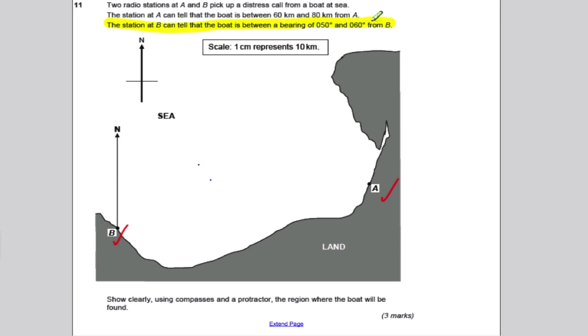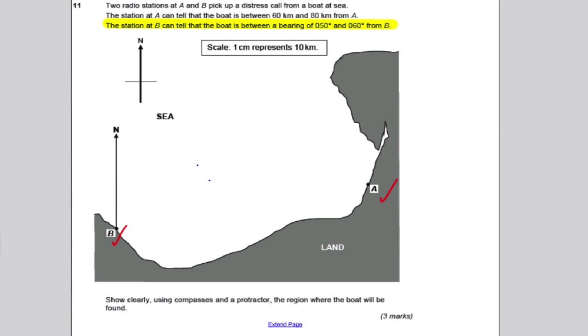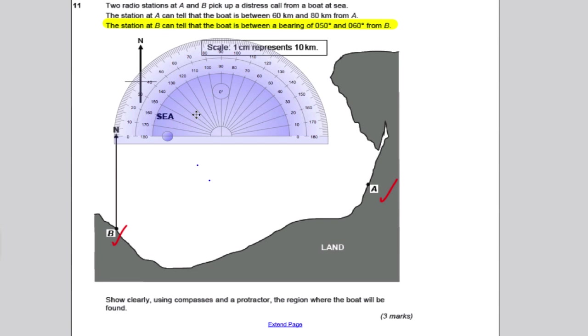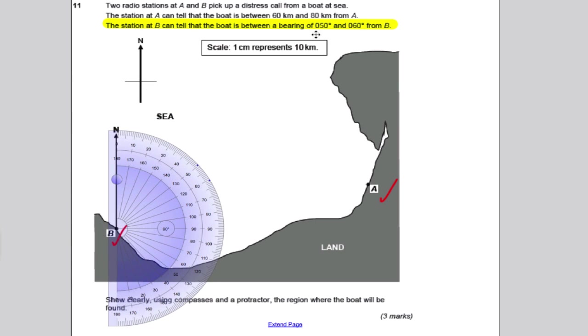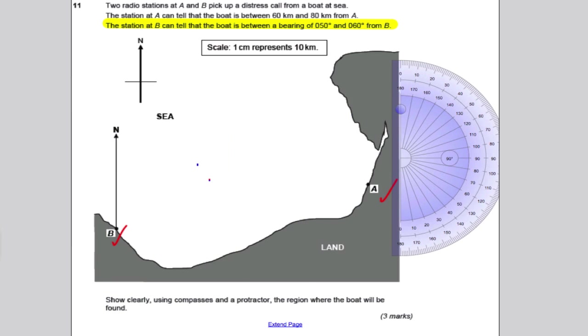Now let's do this one first, because the topic is on bearings. It tells us that at station B, the station B can tell that the boat is on a bearing of 050 or between 050 and 060 from B. Get your protractor out and place that on the point of B. And then, what we want to do, we want to measure out a bearing of 50 and of 60 and mark them in. So let's call that, say, 50, that point there, 50. And let's call the red one here, let's say that's 60 degrees. And then take your protractor away.